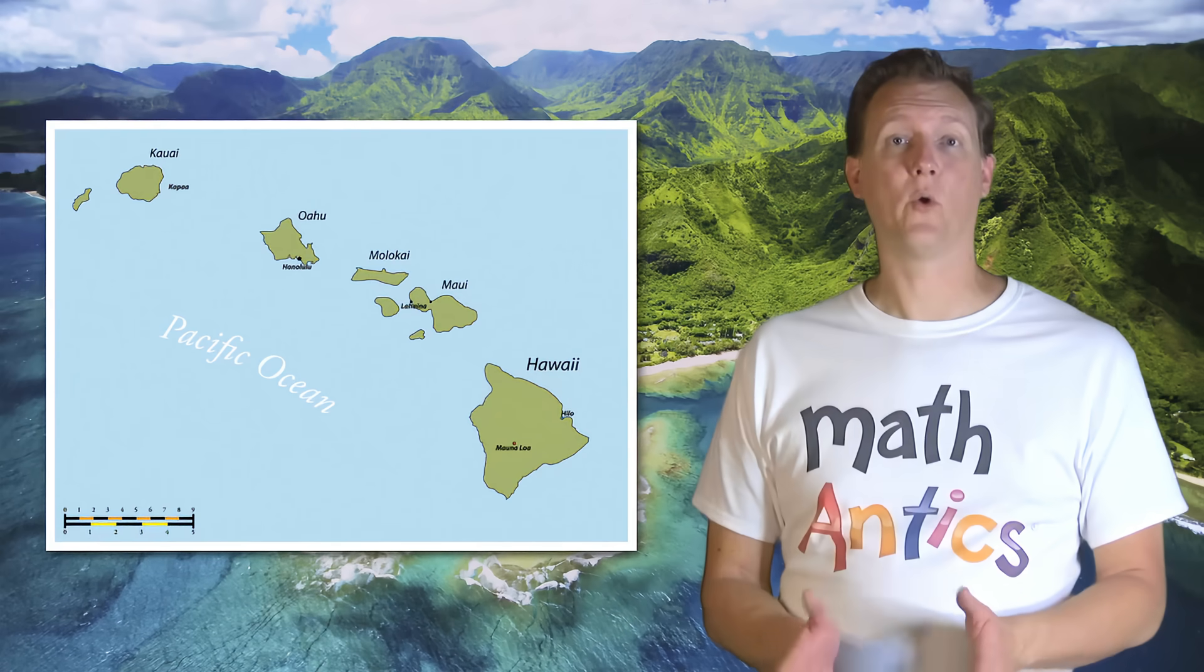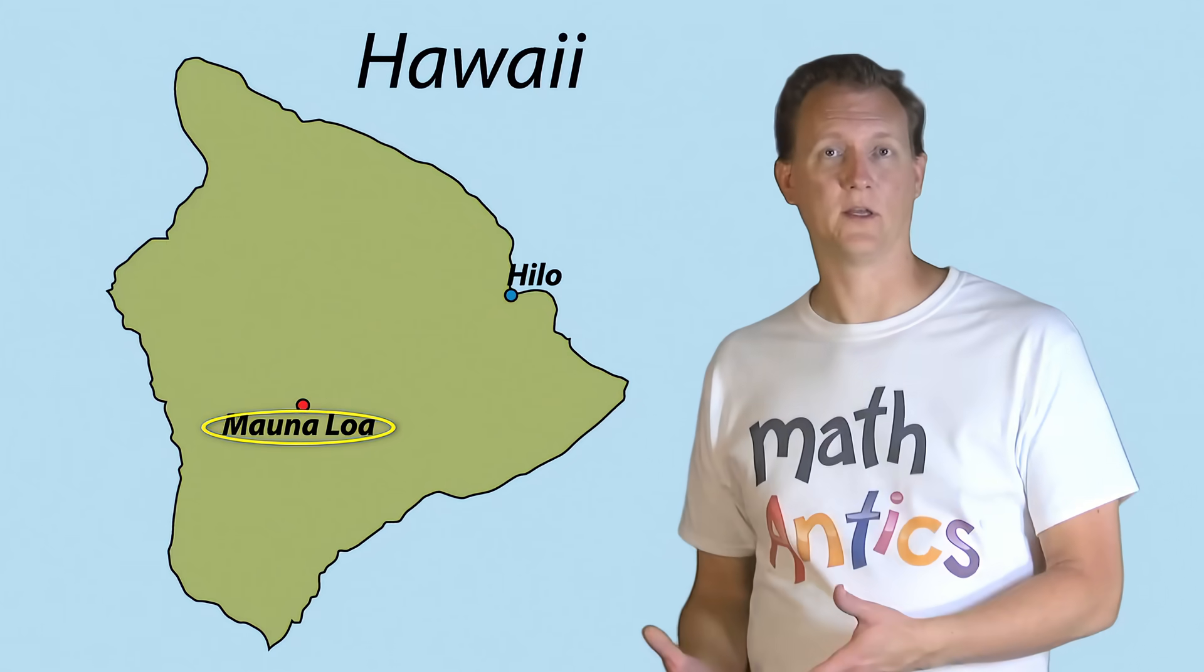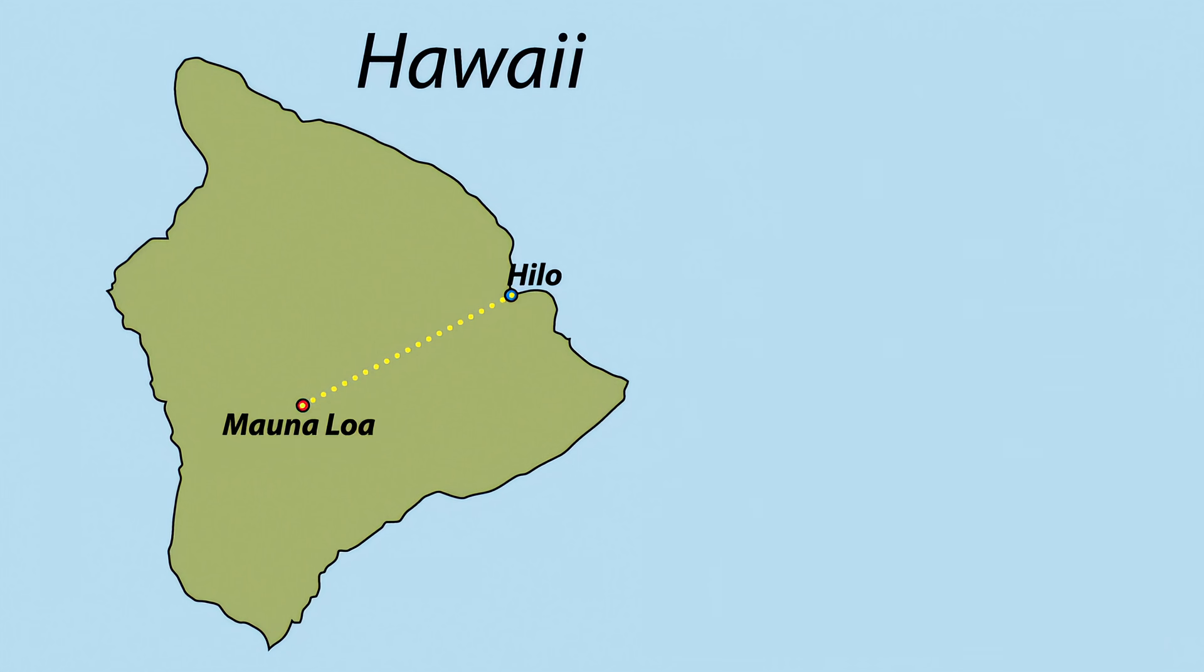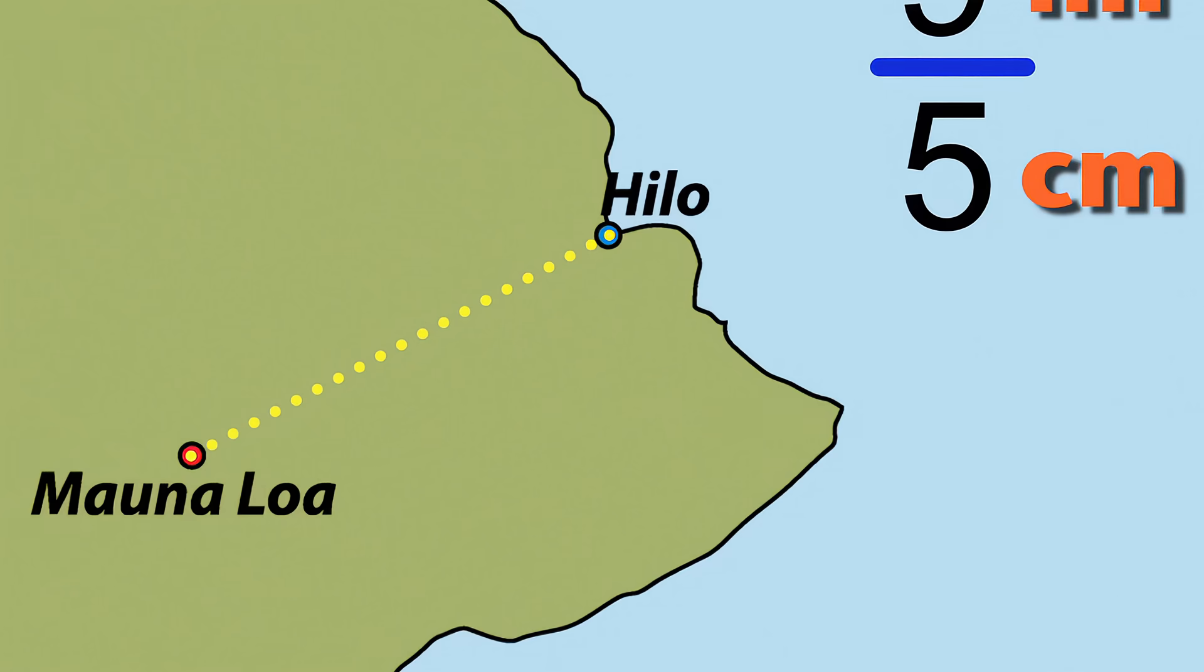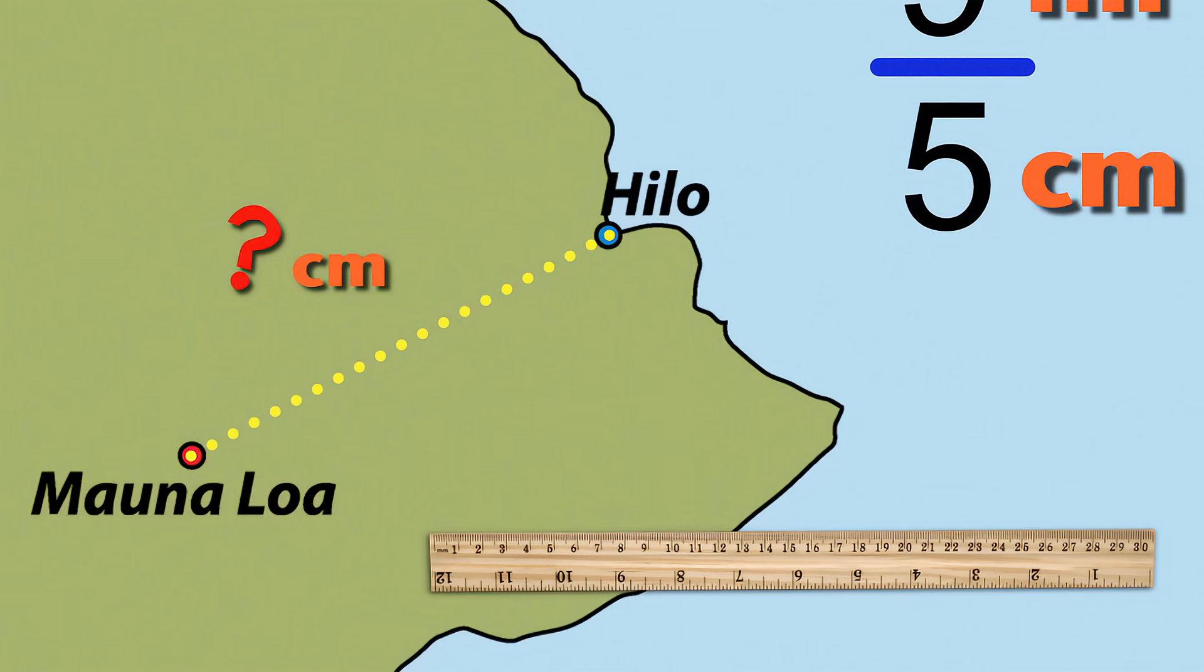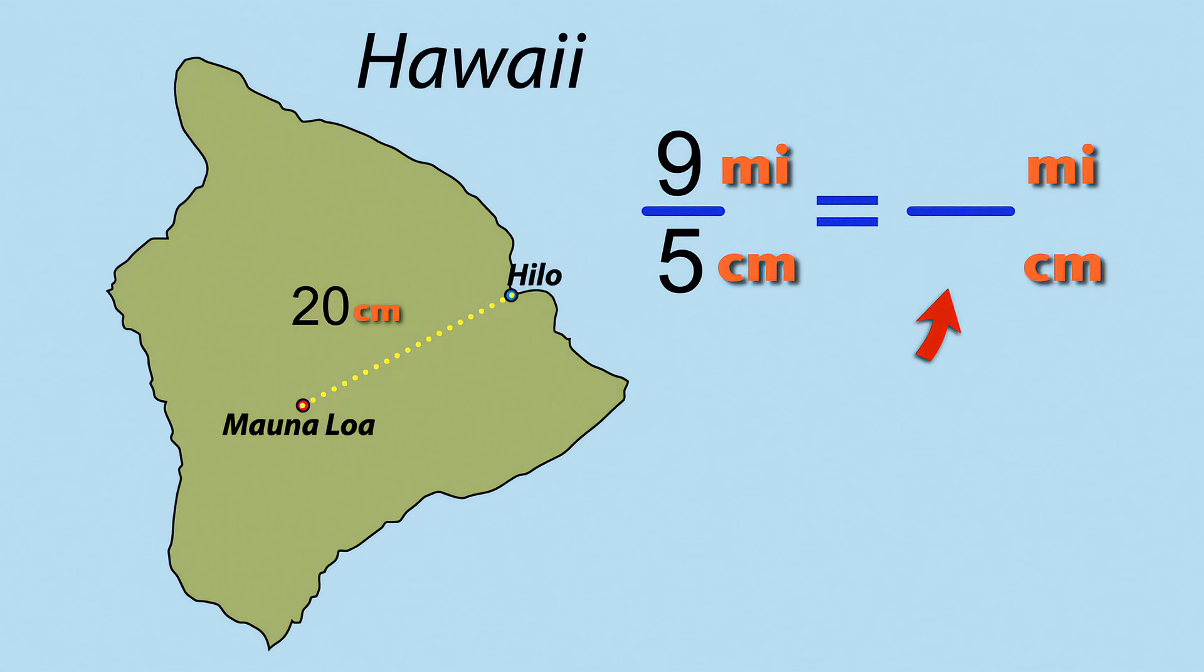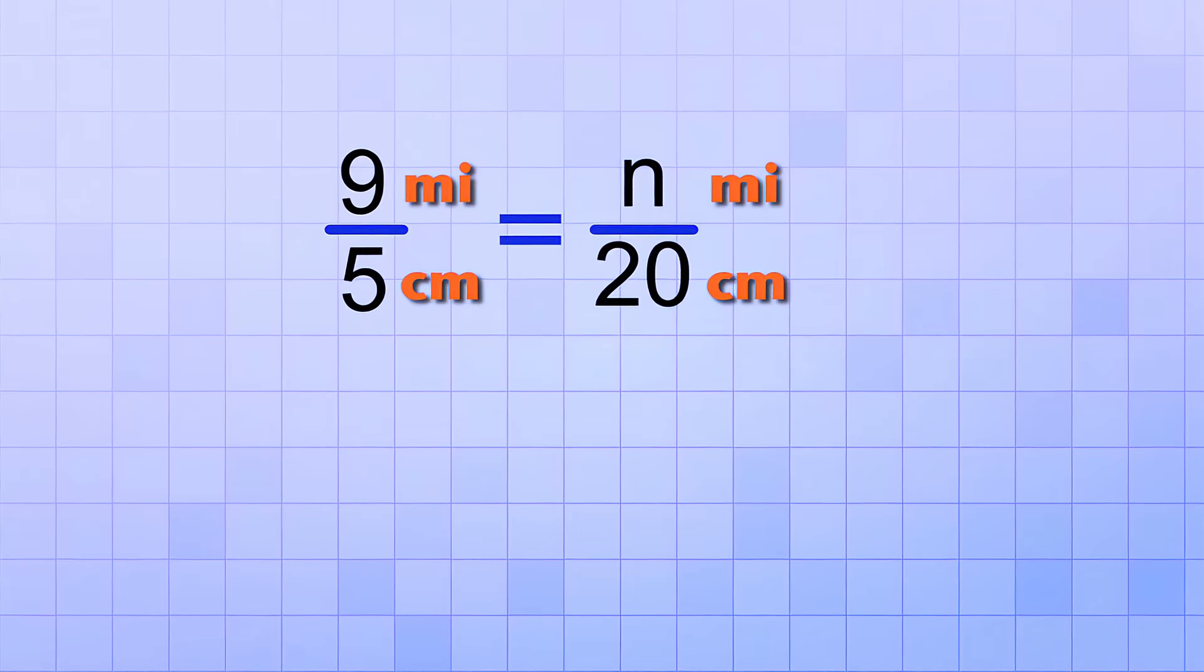Suppose that we want to know how many miles it is from the Hawaiian volcano Mauna Loa to the city called Hilo. We can set up a proportion to figure that out. The ratio that we already know is 9 miles per 5 cm. Now, we just need to set that equal to an equivalent ratio that has the unknown distance in it. Because we have the map, we can use a ruler to measure how many centimeters it is from Mauna Loa to Hilo. It looks like about 20 cm. So the bottom number of the equivalent ratio is 20 cm and the top number is the number of miles which is unknown. Again, we'll just use the letter N to stand for that missing number.